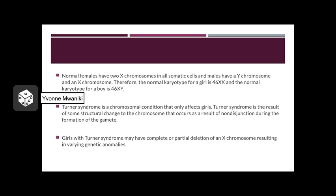Normal females have two X chromosomes in all somatic cells and males have a Y chromosome and an X chromosome. Therefore, the normal karyotype for a girl is 46XX and the normal karyotype for a boy is 46XY.